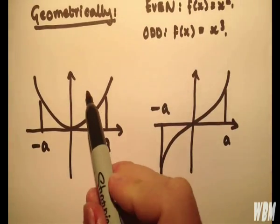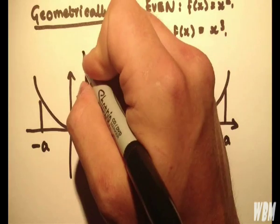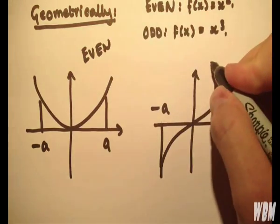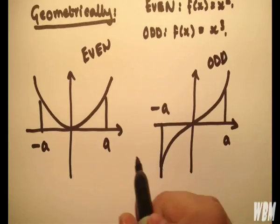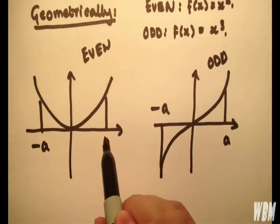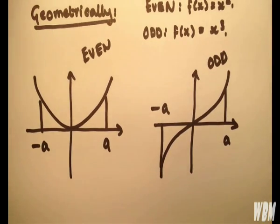So we have even and odd functions, and we're integrating between a and -a for both.